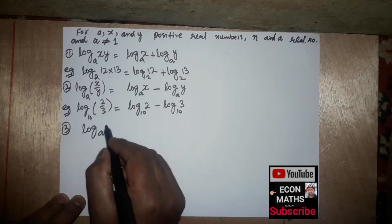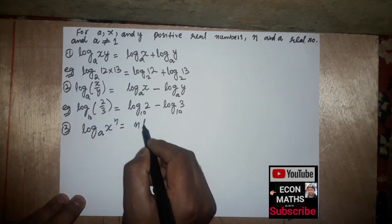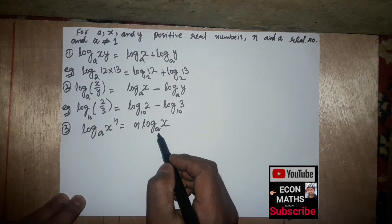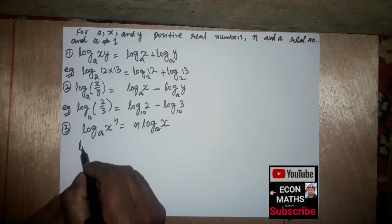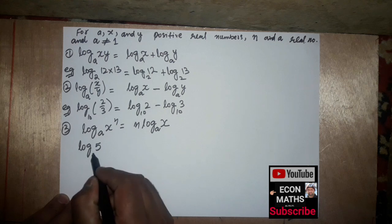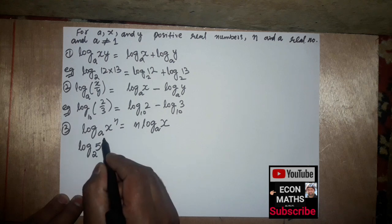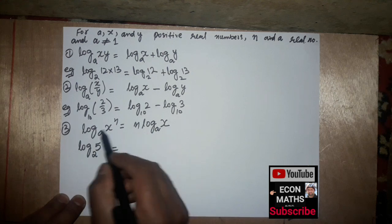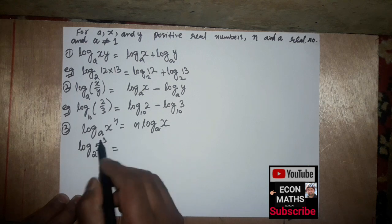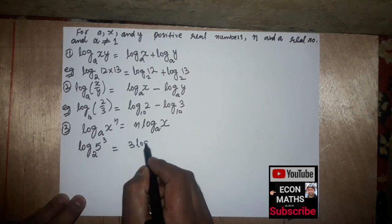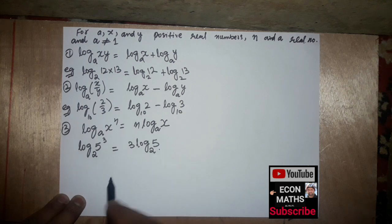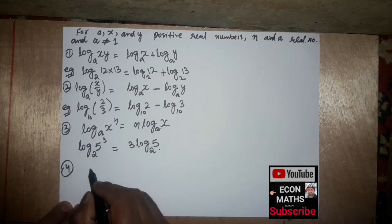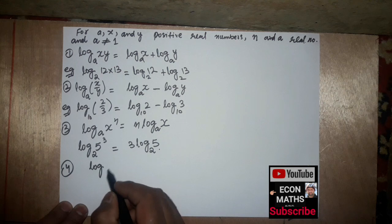The third property is: log of x to the power n to the base a equals n times log of x to the base a. The exponent becomes a coefficient. For example, log of 5 cubed to the base 2 becomes 3 times log of 5 to the base 2.